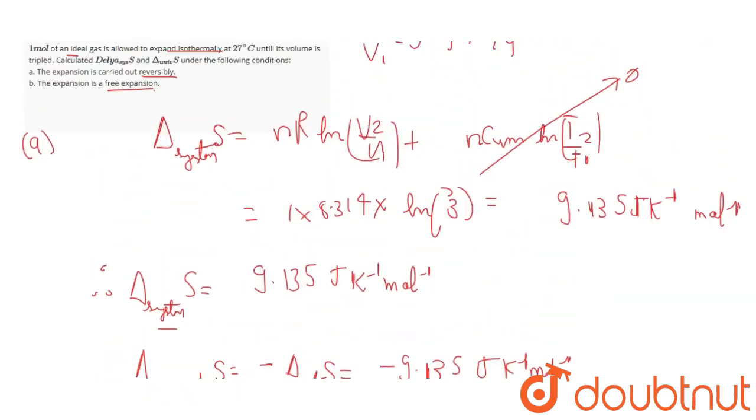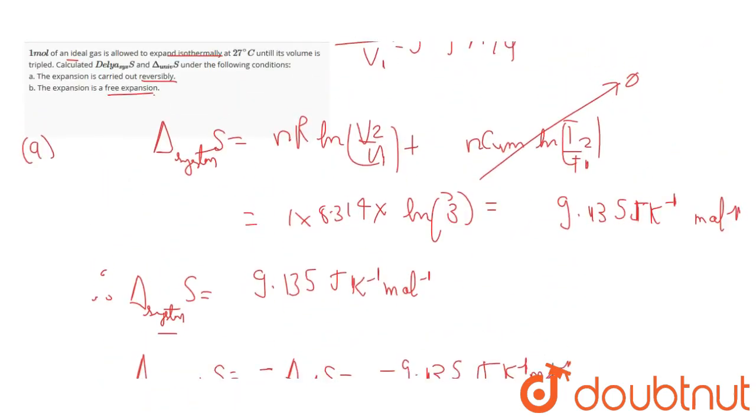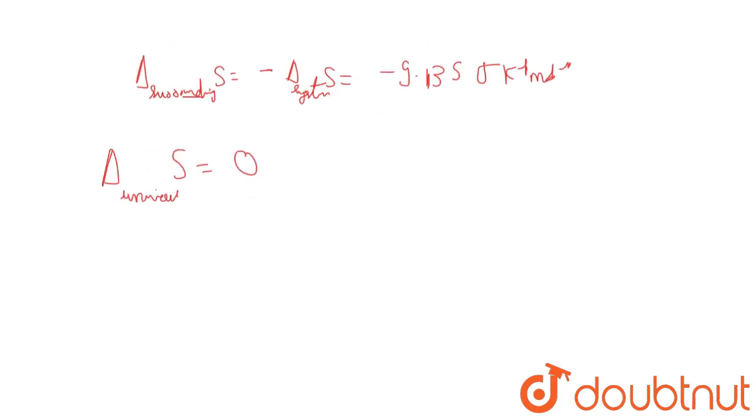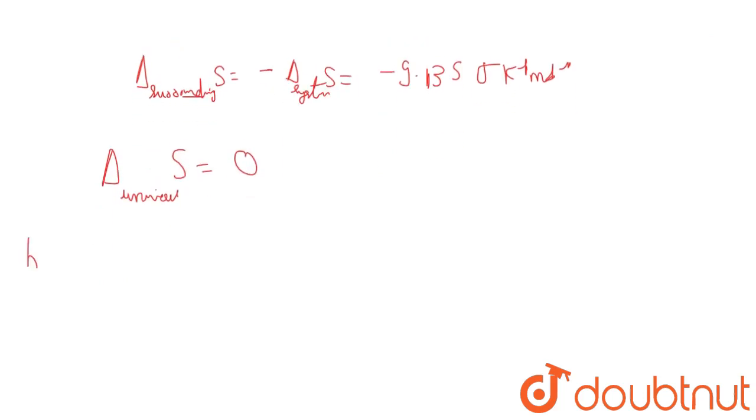For part B, the expansion is a free expansion where surrounding doesn't play a role. Therefore, delta S of surrounding = 0.